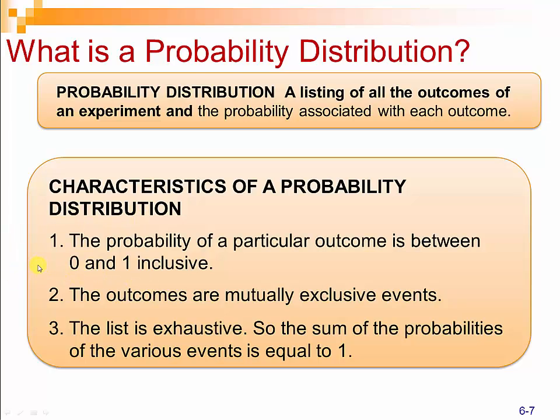Let's quickly look at our characteristics of a probability distribution. Number one, the probability of a particular outcome is between zero and one, inclusive. Number two, the outcomes are mutually exclusive events. What does mutually exclusive mean? Our book provides the answer: a property of a set of categories such that a person, object, or measurement is included in only one category. And number three, the list is exhaustive, so the sum of the probabilities of the various events is equal to one. This will become more clear as we go on and start taking a look at probability distributions.